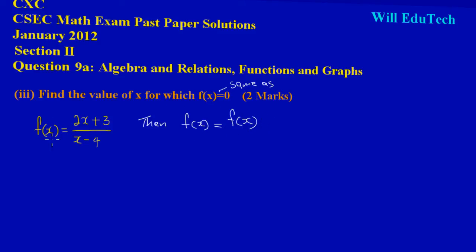In this part, they gave us a function — they gave us an expression in x for f of x. So we can say f of x is 2x plus 3 all over x minus 4. And at the top, they said also that f of x has the same value as 0. So basically what we could do here, we could say all of this is equal to 0, equating the expression for f of x to 0.